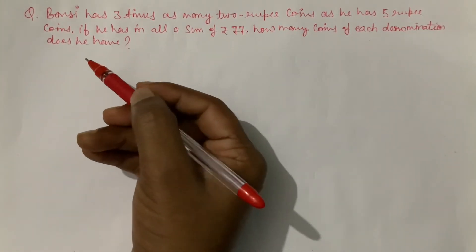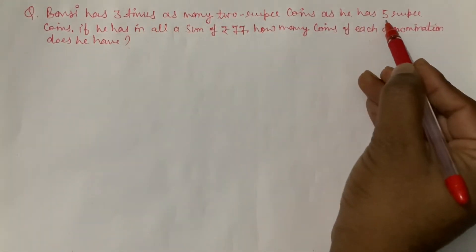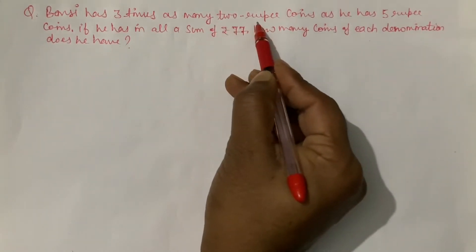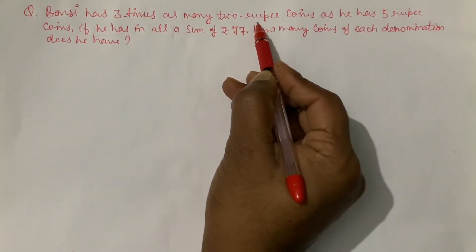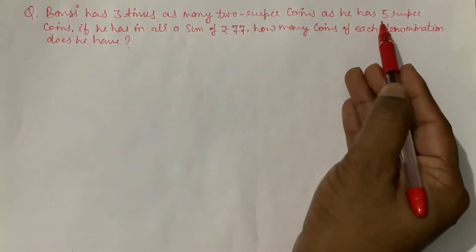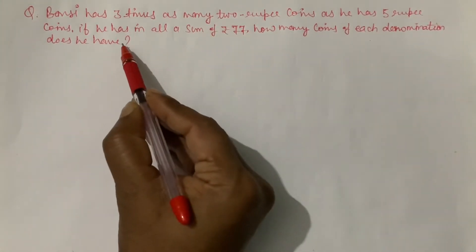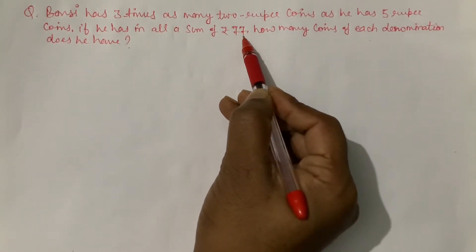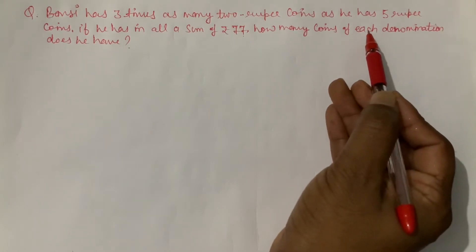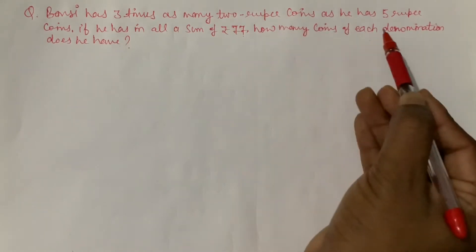Is question mein diya hai ki Bunsi ke paas five rupee ke coins jitne hain, uska three times two rupee ke coins hain. Aur agar unse banne waale amount ko — jitna five rupee ke coins ka amount banega aur jitna two rupee ke coins ka amount banega — agar hum unko add kar dein toh uske paas total sum seventy seven hoga. Toh humein batana hai how many coins of each denomination, matlab uske paas five rupee ke aur two rupee ke kitne coins hain.